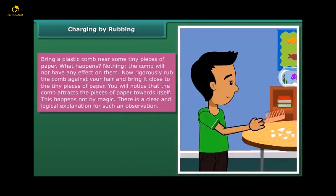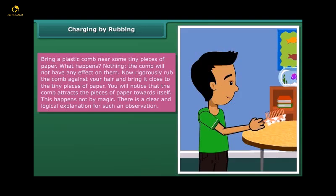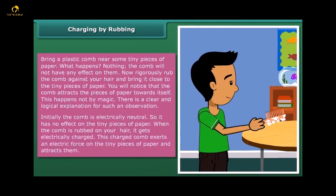Charging by Rubbing: Bring a plastic comb near some tiny pieces of paper. What happens? Nothing. The comb will not have any effect on them. Now rigorously rub the comb against your hair and bring it close to the tiny pieces of paper. You will notice that the comb attracts the pieces of paper towards itself. There is a clear and logical explanation for such an observation. Initially the comb is electrically neutral, so it has no effect on the tiny pieces of paper.